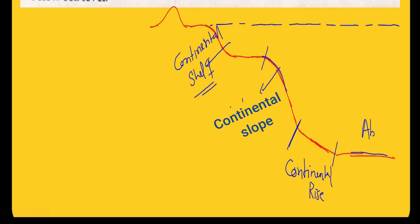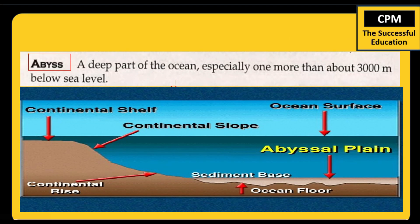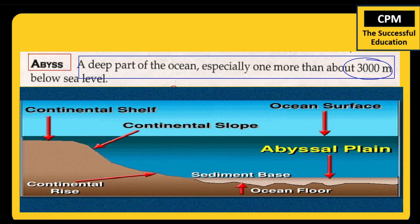So we can say that abyss means any part of the water body of the ocean which is deeper than 3000 meters. In simple terms, we can say a deep part of the ocean, especially one more than 3000 meters below the sea level, is considered as abyss.